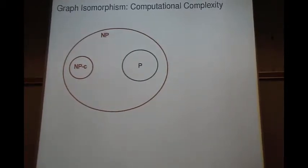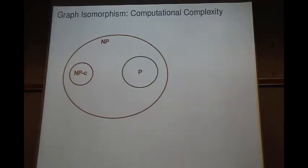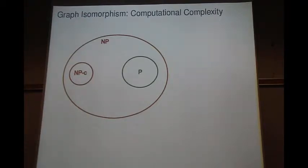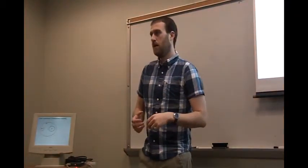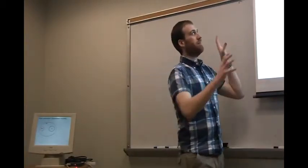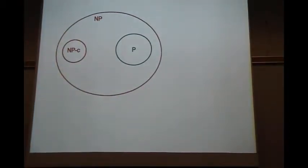In computational complexity, we believe the world looks something like this. P is the class of problems that can be solved in polynomial time — those are the problems that can be solved efficiently. NPC is the class of NP-complete problems: these are problems that are as hard as any other problem in NP, meaning if we could solve any one NP-complete problem in polynomial time, then we can solve every problem in NP. We can't show that P is different from NP — that's one of the biggest open problems. Proving something is NP-complete is as well as we can do in terms of proving hardness.